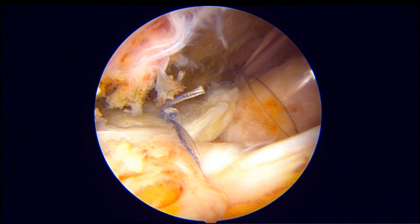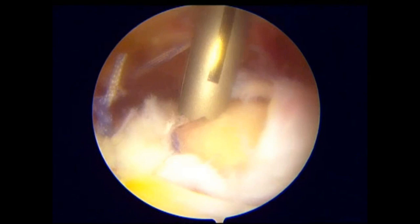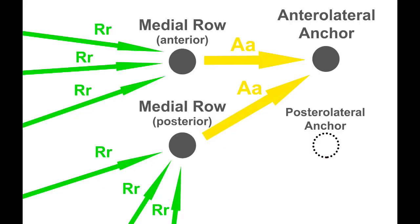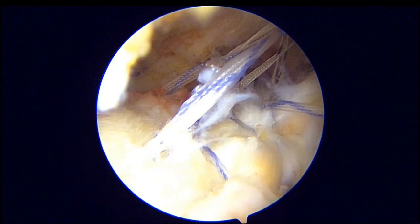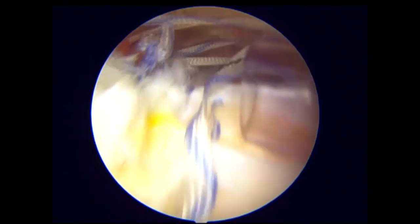Second margin convergence seen here after passage of two suture tapes. Anterior medial row anchor placement of a 2.6 mm all-suture Arthrex FiberTack RC suture anchor triple-loaded with suture tape. This schematic depicts the repair vectors of tied suture to the medial row and the repair vectors to the anterior lateral suture anchor. Double or triple-loaded anchors are used in the medial row, and all sutures are tied.